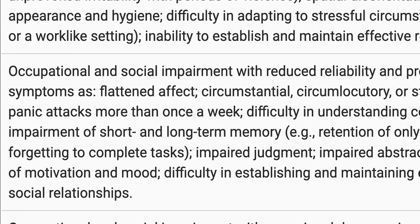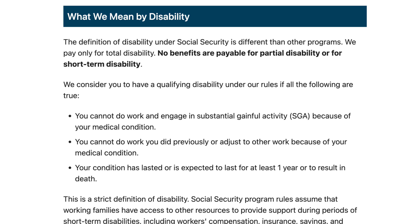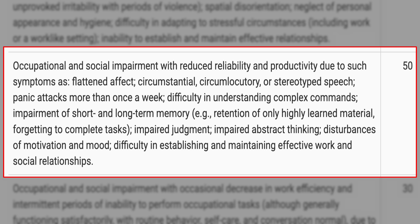The 50% rating comes down to occupational and social impairment — also known as functional impairment. Occupational is work; social is your home life. In contrast, when you're filing a Social Security disability claim there's only zero or a hundred — you either win or you don't, and it's all about work. With VA ratings, they take your social life into account. The 50% rating is occupational and social impairment with reduced reliability and productivity due to such symptoms as flattened affect.